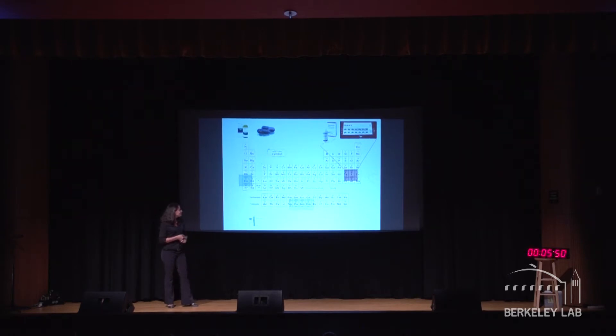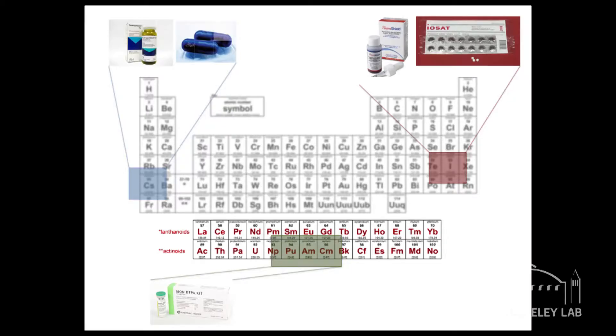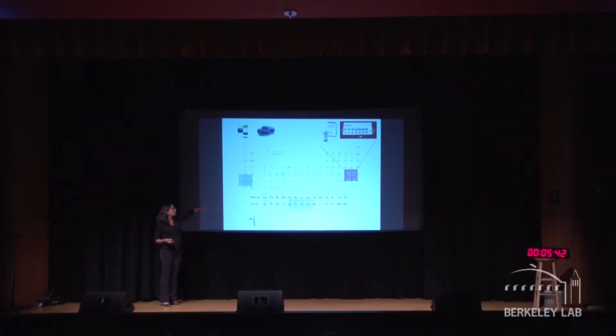That's one of the elements we focus on in my lab. We look at all those different elements highlighted at the bottom of the periodic table. They're called the lanthanides and actinides, the F elements or heavy elements.